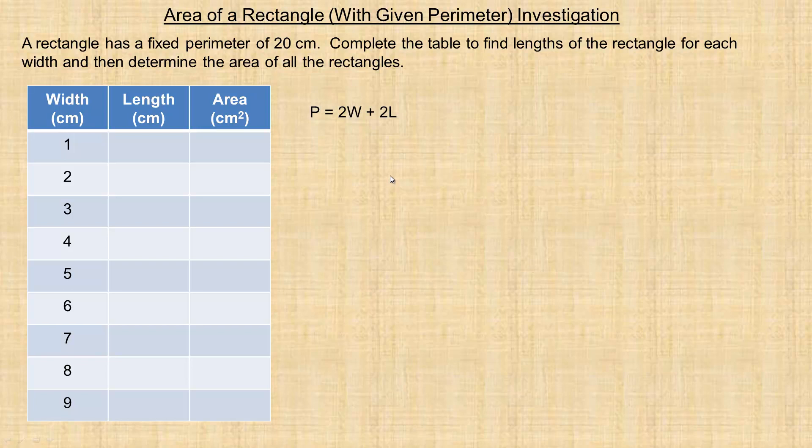In this video we're going to take a look at collecting data for an investigation. This investigation has to do with the area of a rectangle that has a fixed or given perimeter, and we're going to fix it at 20 centimeters. I could have chosen different numbers, so there's no particular reason I used 20.